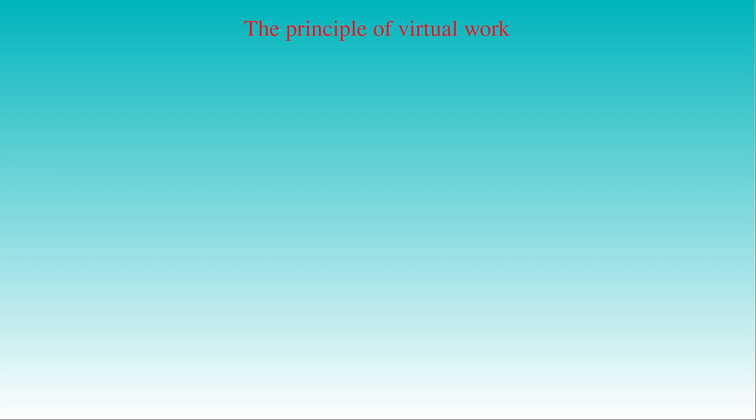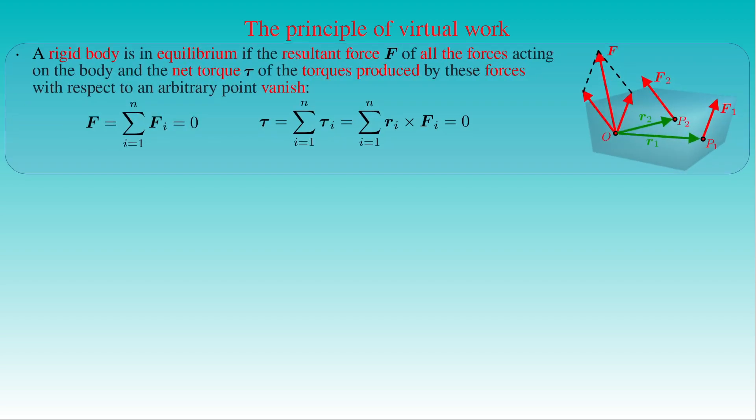In most problems related to the equilibrium of a point mass or a rigid body, we can find both unconstrained and constrained forces among the forces acting in the system. The constrained forces are not predetermined but must be taken into account in the condition of equilibrium. A rigid body is in equilibrium if the resultant force F of all forces acting on the body and the net torque tau generated by these forces with respect to an arbitrary point vanish.